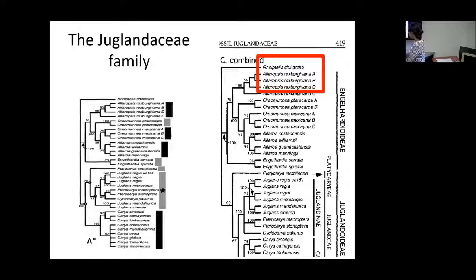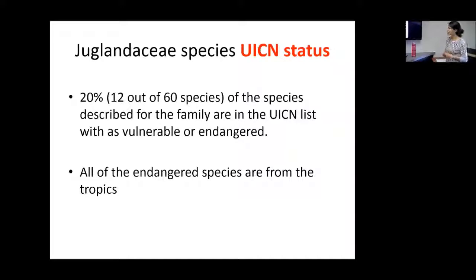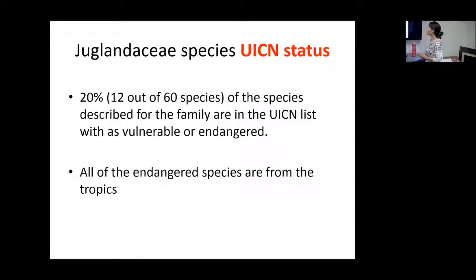In the Juglandaceae phylogeny, most species are ectomycorrhizal, but Juglans forms arbuscular mycorrhizal associations and is right in the middle of the phylogeny — so we want to understand why Juglans has arbuscular mycorrhizal associations. Also, Juglandaceae species are very threatened, especially in the tropics, where they are highly associated with cloud forests. Cloud forests are very endangered due to global warming and high deforestation, and 20% of the species on the IUCN red list are tropical, with all of the Juglandaceae species on that list being tropical — and we don't know anything about their type of mycorrhizal association.